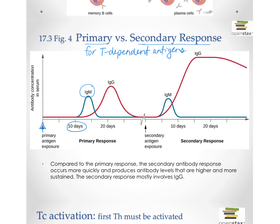That takes some time through cytokine signaling. Maybe eventually there'll be some class switching and a little bit more of some other kind of antibody — but here, we're out 20 days already from the first time you were infected. So that's why — maybe this wasn't an infection — maybe a person got a vaccine, and the first time it takes a while to get good antibody production.